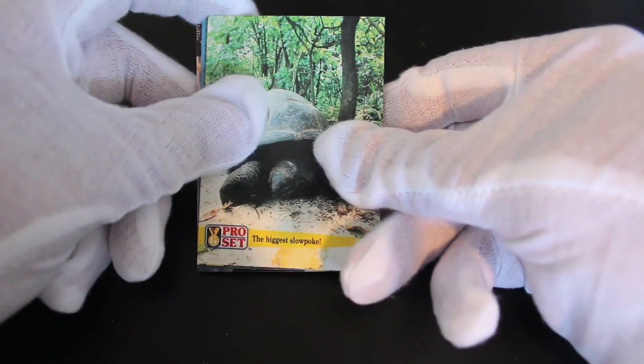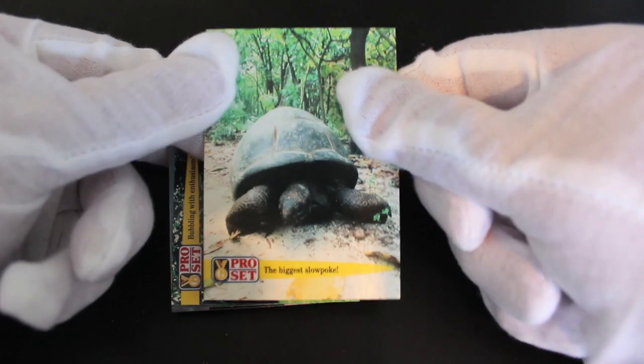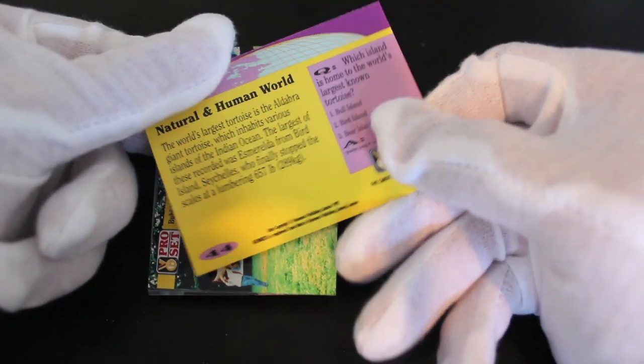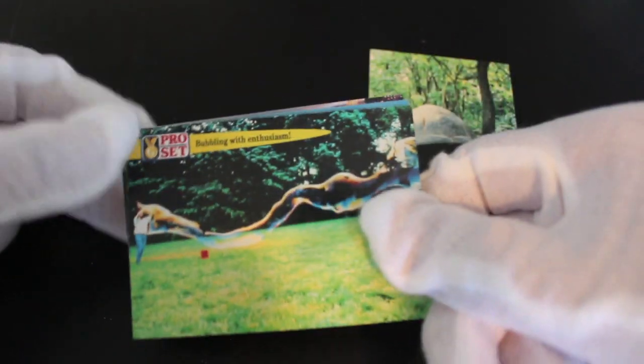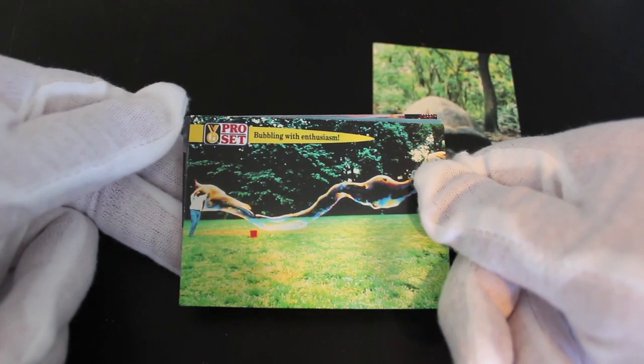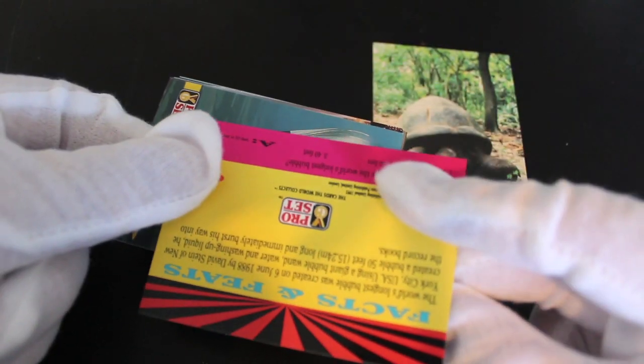Straight away we've got the biggest slowpoke. Yeah it's a giant turtle or tortoise, is it a turtle or a tortoise? Tortoise, yeah. Giant tortoise there you go. Bubbling with enthusiasm, so a giant bubble as well. Yeah this is good, it's just world records innit.